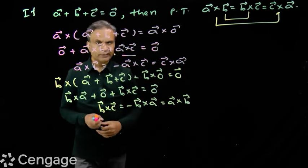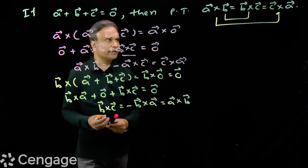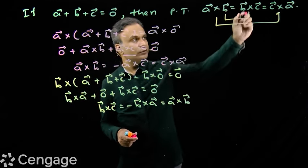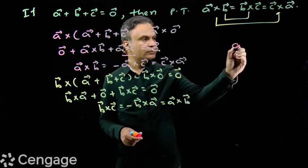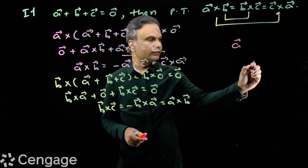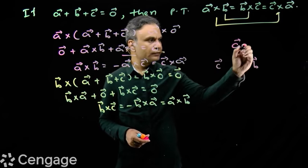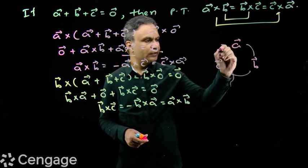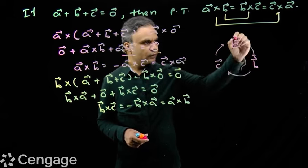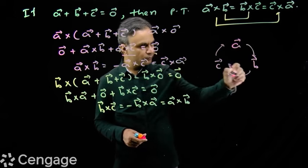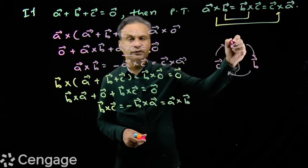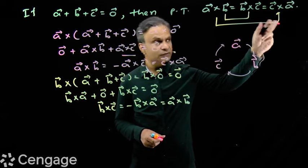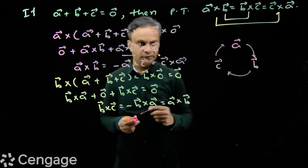Remember this result. We have the cyclic order of vectors: a cross b, b cross c, c cross a. With three vectors a, b, c, we follow this cyclic order. Note it is c cross a, not a cross c.